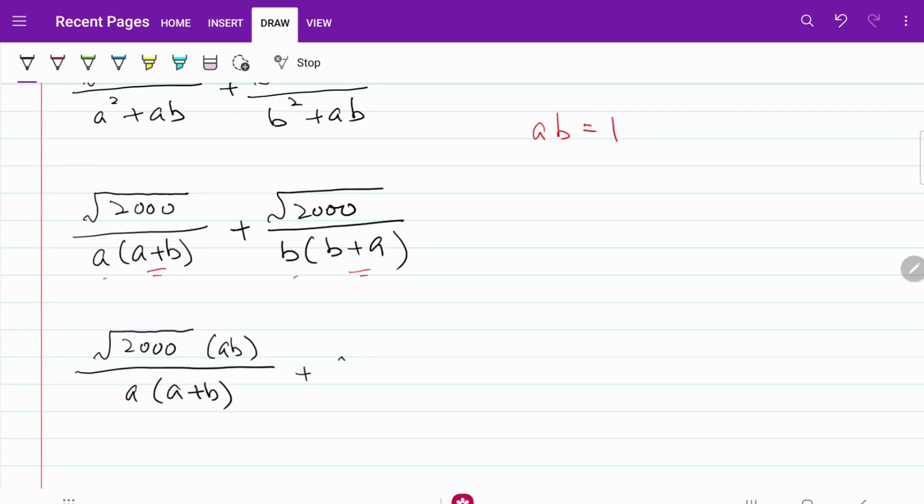Again, I'm doing the same thing to the back part. Square root of 2000 multiplied by ab over b, I'm sorry, a plus b.